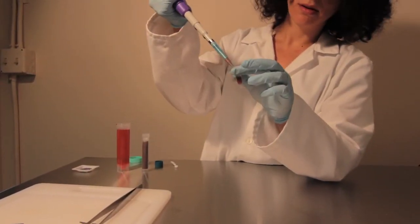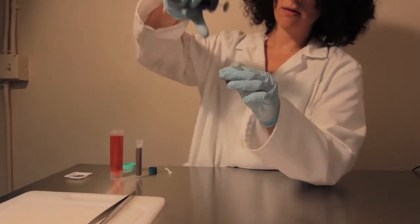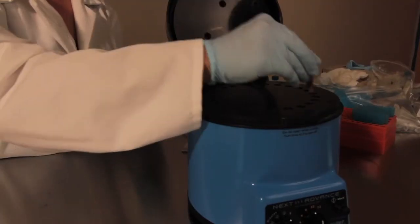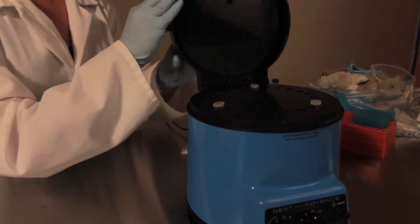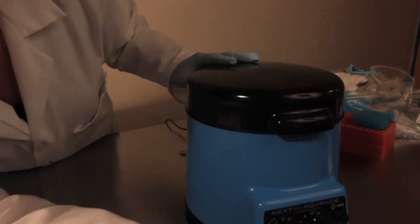We recommend using a volume of trizol no larger than 500 microliters for your homogenization in the Bullet Blender. If your sample size is larger than 50 milligrams, homogenize your sample in 500 microliters.